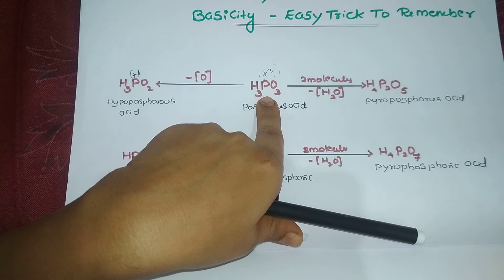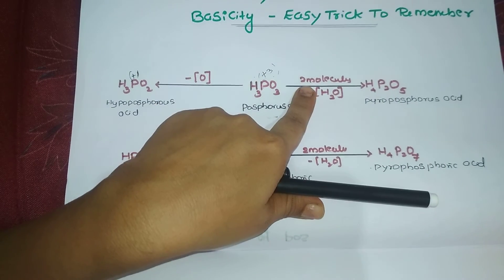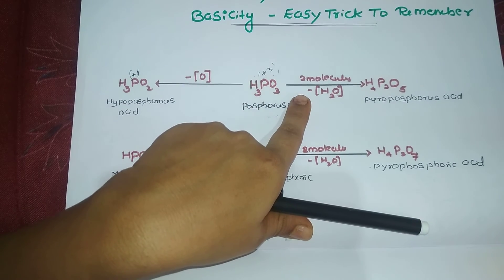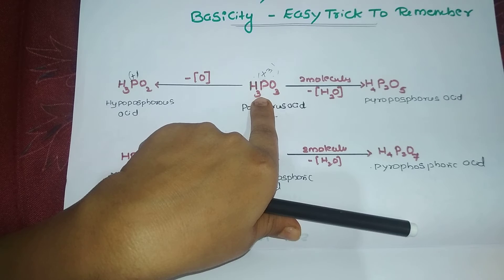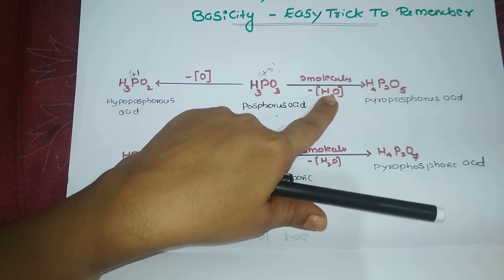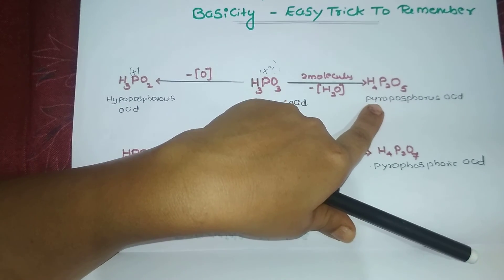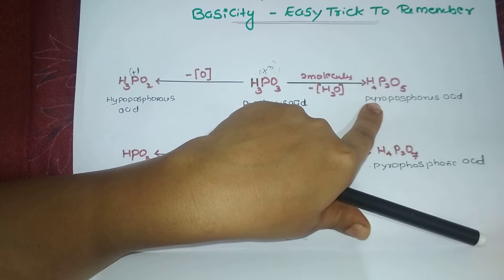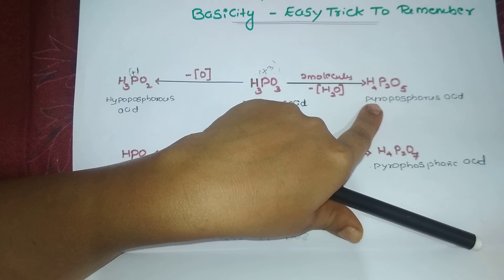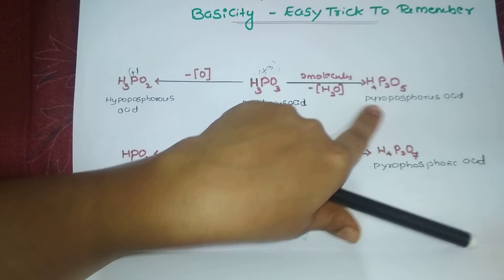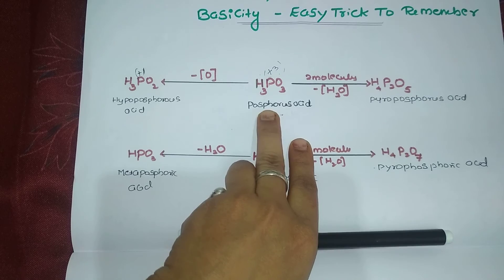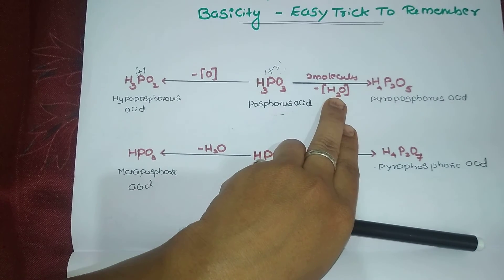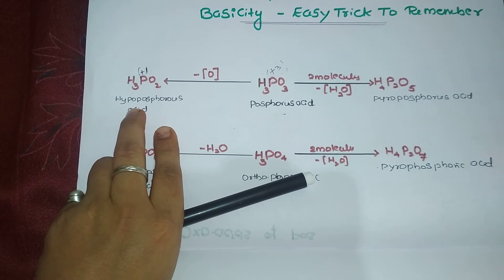Similarly, take two molecules of phosphorous acid (H₃PO₃ + H₃PO₃ = H₆P₂O₆), then remove one water molecule to get H₄P₂O₅ - pyrophosphorous acid. When a water molecule is lost in the reaction, the prefix pyro is used. So to summarize: remove one oxygen → hypo prefix; take two molecules and remove one water molecule → pyro prefix.